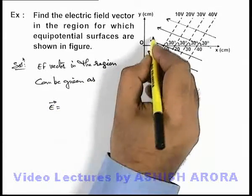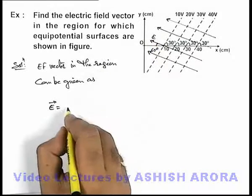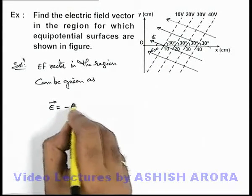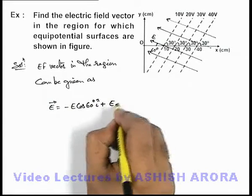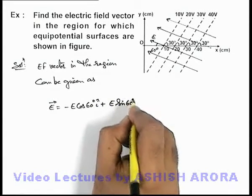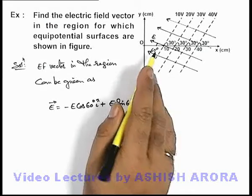If it is E then in x direction it will be minus E cos 60 degrees i cap, plus E sin 60 degrees j cap. In magnitude of electric field we can write...